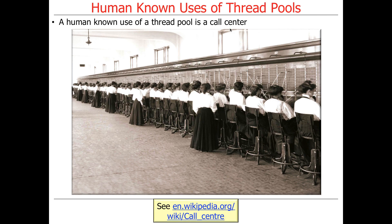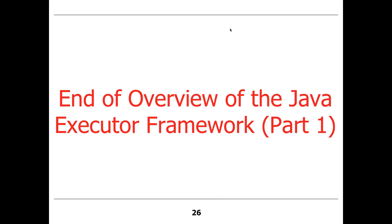A well-known human use of a thread pool is a call center. You've all dealt with call centers — you call for tech support, credit card issues, or tax advice, and that number is a front end to a bunch of people sitting with headphones on talking to customers. Obviously you don't have a customer representative for every person who calls in — you know that because you spend time on hold waiting for the next available operator. Waiting for the next available operator is basically the same idea as having a pool of threads where work sits in a queue until someone is available. So that's a quick overview of the Java Executor Framework.